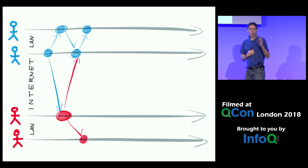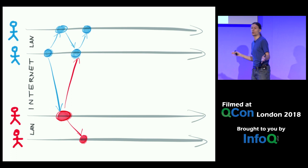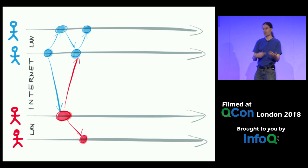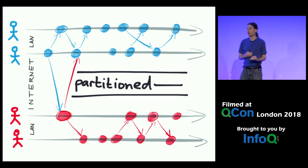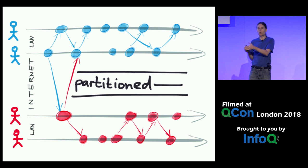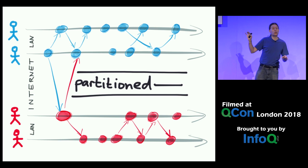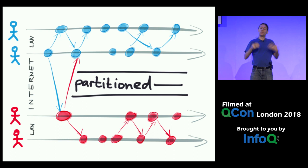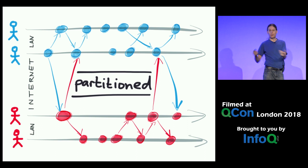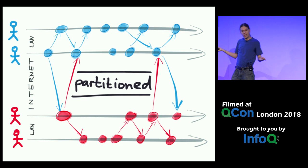What I'm interested in is generalizing this model so that you can have any communication topology in the system. If the blue user has two devices — a phone and a laptop — and the pink user also has two devices, they should just be able to synchronize via local network or whatever connectivity they have, even if not connected to the internet. This kind of direct device-to-device communication simply won't work with Google Docs because you cannot safely bypass the central server. I think it would be really great if applications could be more decentralized — using whatever network is available, and synchronizing via the internet once connectivity is re-established.